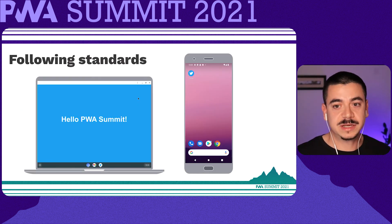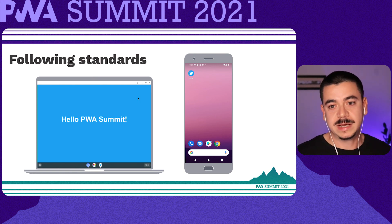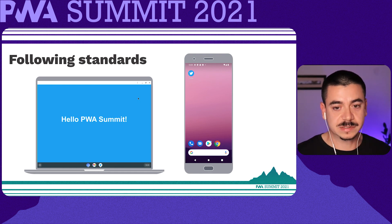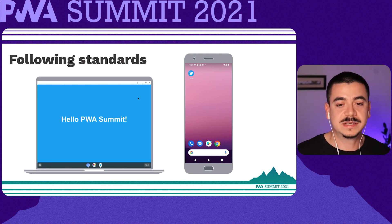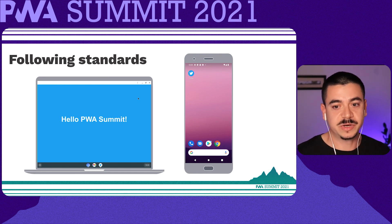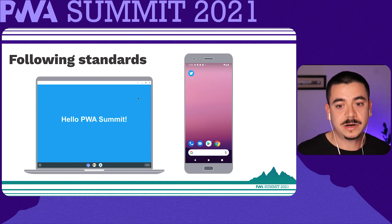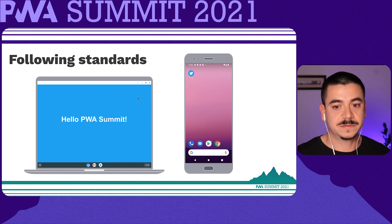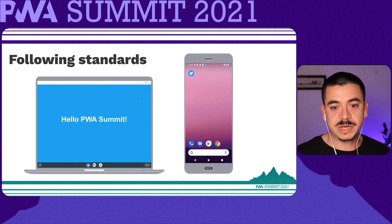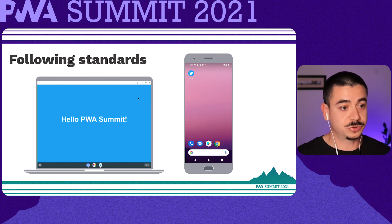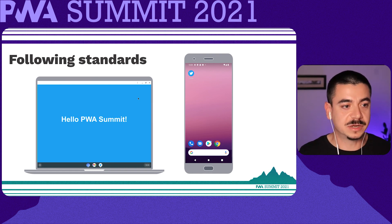By crafting a simple manifest file, we can comply with many platforms and systems and deliver great user experiences across devices. The web app manifest is a JSON file that tells the browser about your progressive web app and how it should behave when installed on the user's desktop or mobile device. A typical manifest file includes the app name, the icons the app should use, and the URL that should be opened when the app is launched.